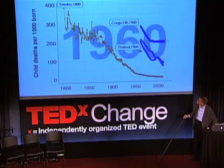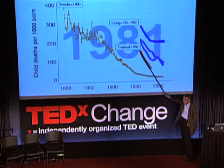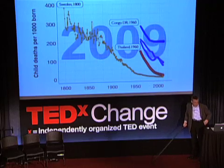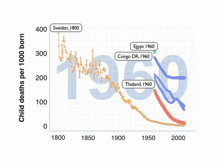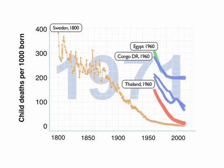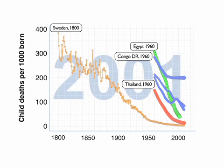Let me show you Thailand — see the success story from the 1960s, how they went down and reached almost the same child mortality levels as Sweden. And I'll give you another story: Egypt. The most hidden glorious success in public health. Egypt was up here in 1960, higher than Congo — the Nile Delta was a misery for children, with diarrheal disease, malaria, and many problems. Then they got the Aswan Dam, electricity in homes, increased education, primary healthcare, safer water, and they eradicated malaria. Isn't it a success story?